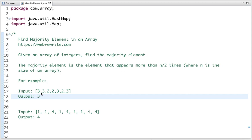If you see the first example, the size of the array is 7, and if you do n by 2, meaning 7 by 2, it is 3.5, and if you round it off, any number which appears more than 3 times is the majority element. So the element is 3.